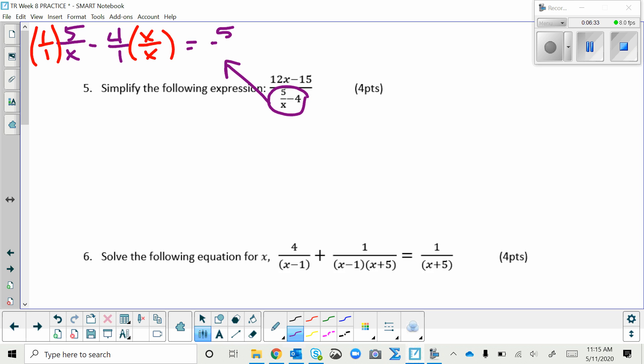So that gives me 5 over X minus 4X over X and combining the numerators or combining this into one fraction, gives me 5 minus 4X over X.